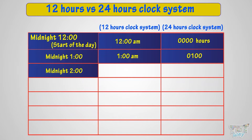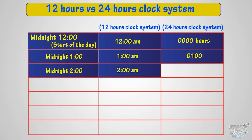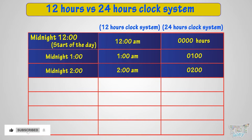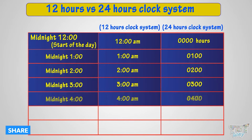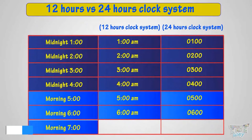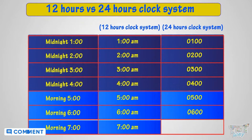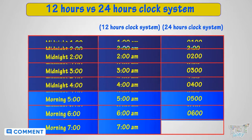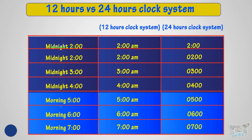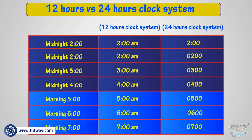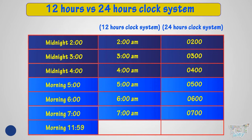2 in the morning is called 2 a.m. in the 12-hour clock system, and 0200 — that is 200 hours — in the 24-hour clock system. 7 in the morning is called 7 a.m. in the 12-hour clock system, and 0700 — that is 700 hours — in the 24-hour clock system.